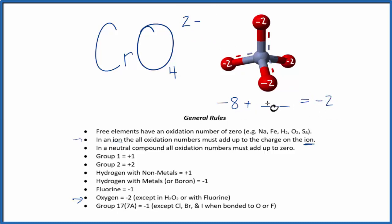So minus 8 plus a positive 6, that would give us minus 2. So this positive 6 is the oxidation number on the chromium. And all of these numbers here, they add up to the charge on the ion, the chromate ion.